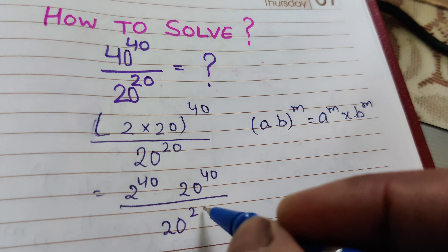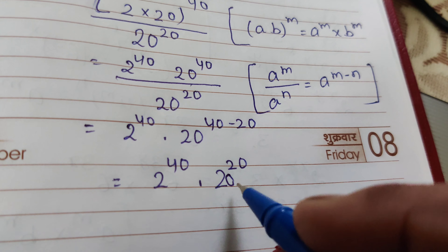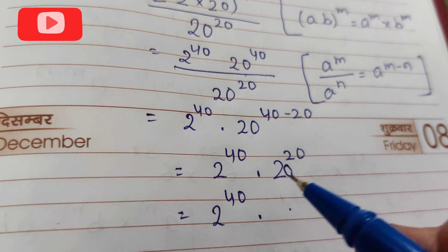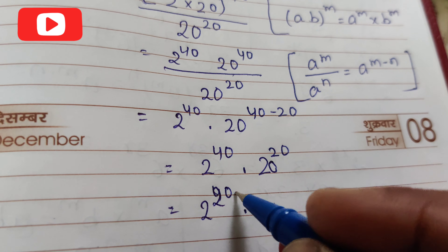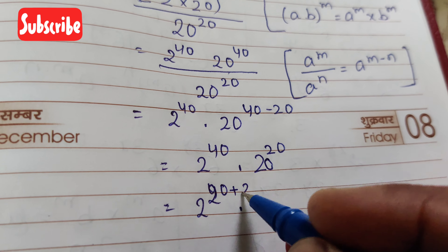We can add the powers: 20 raised to the power of 20. Now we can write 2 raised to the power of 40 as 2 raised to the power of 20 plus 20, into 20 raised to the power of 20.